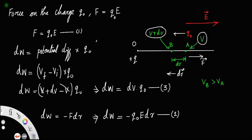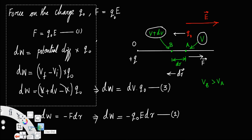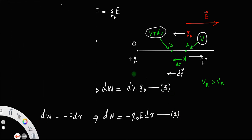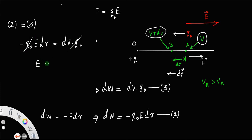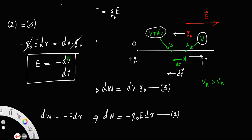Comparing equation 2 and equation 3, we have minus Q0·E·dR equals DV times Q0. Canceling Q0 from both sides gives E equals minus DV by dR. This is the relationship between the electric field and potential: the electric field at any point is the negative of the derivative of potential with respect to distance.